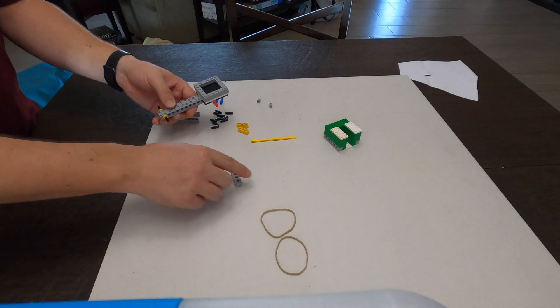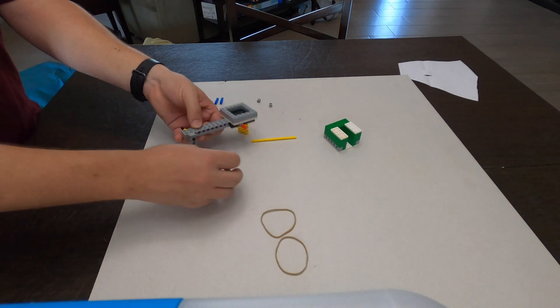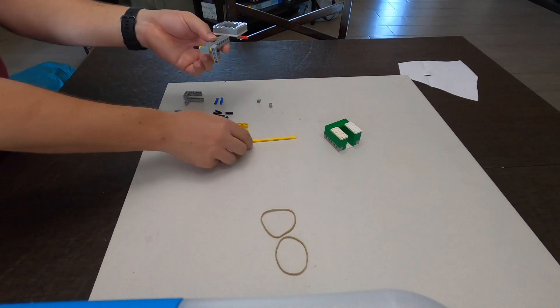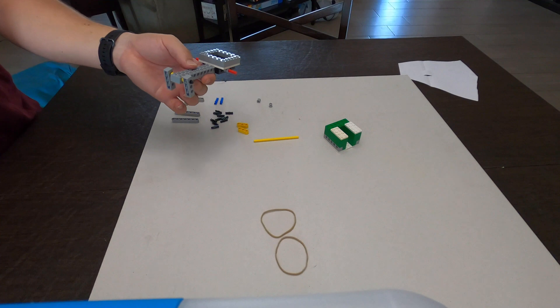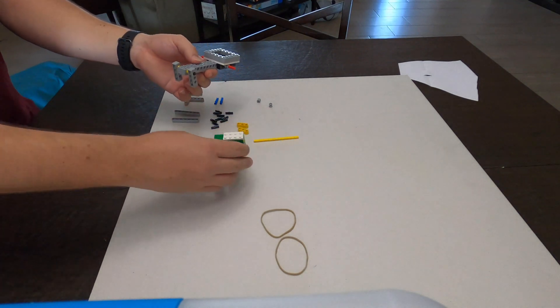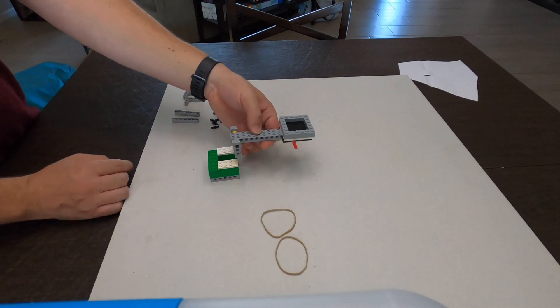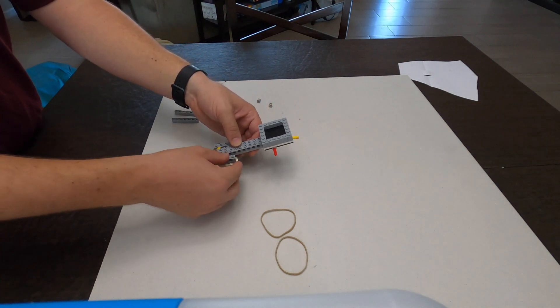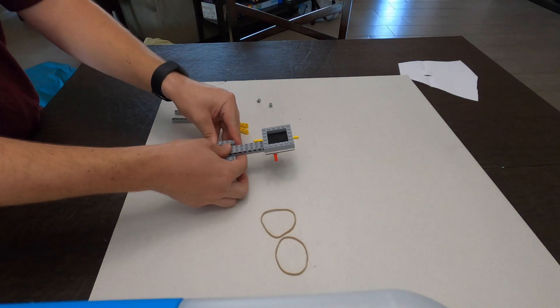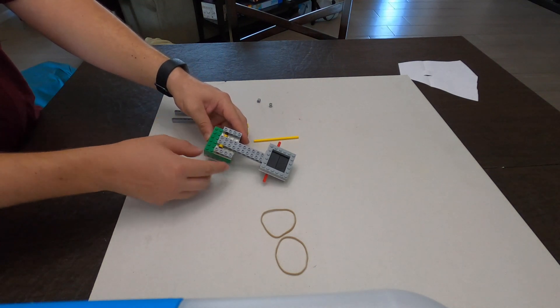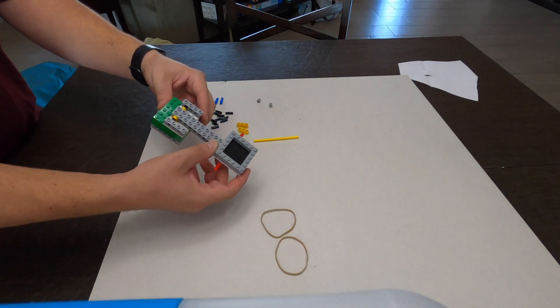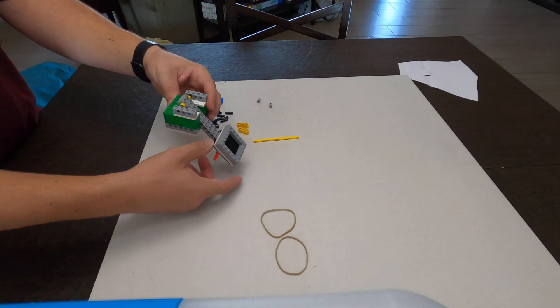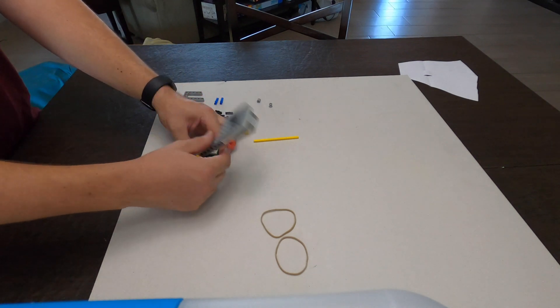And then we're going to take our one-by-four Technic brick so it has the holes in it and we're just going to kind of dangle it. See how they're not attached in any way? They're just going to dangle. Now this is one of the tricky parts. So what we're going to do is we're going to attach these two bricks to the ends here. So I'm going to put this one here and then move this one here. So see how they're on the ends and then this piece should go right in the middle. It might catch a couple times but there should be some room for it to move in the middle and this is going to be our catapult.